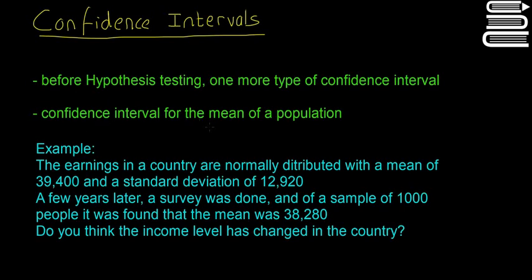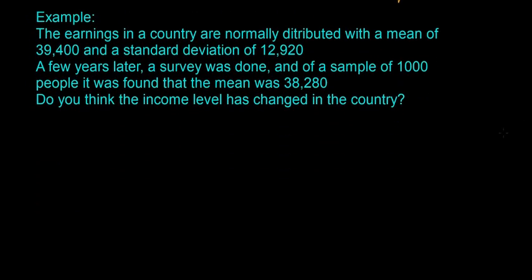This time we're going to be talking about confidence intervals for the mean of a population. So before this, we were always talking about a population proportion. So we had our P's and our P hats. This time we're going to be talking about our Mews and our X-bars. So I'll explain what we mean. So here's our question in the blue here. So this is the example.